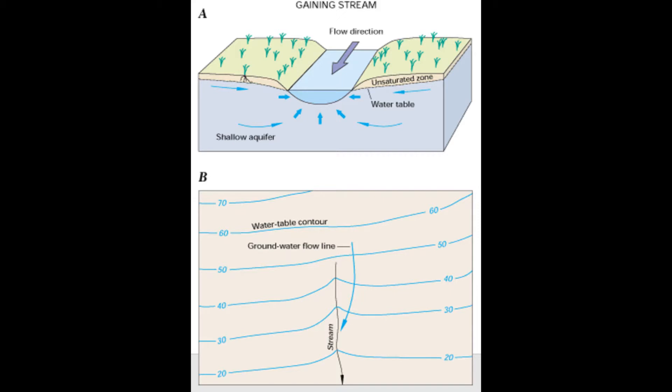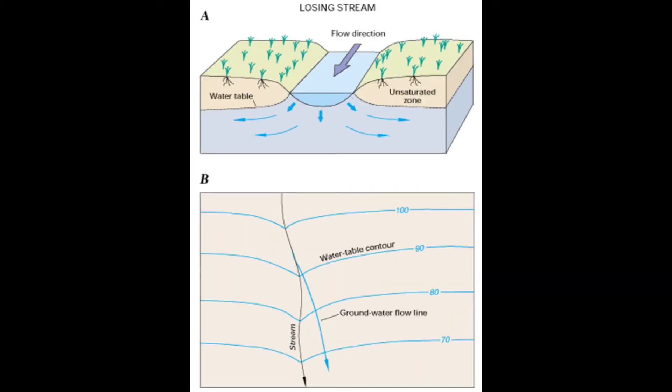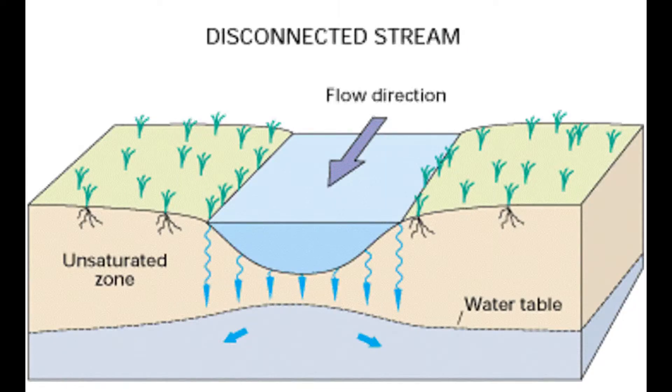Streams can interact with groundwater in three ways. They can be a gaining stream, where the stream gains water from inflow of groundwater through the streambed. They can be a losing stream, where water is lost by outflow through the streambed. Or, more commonly, they do both — losing in some reaches and gaining in others.